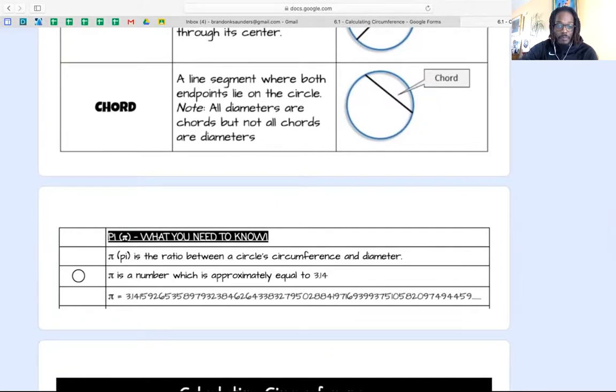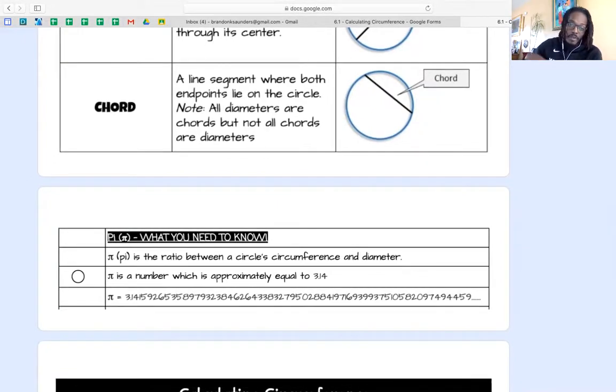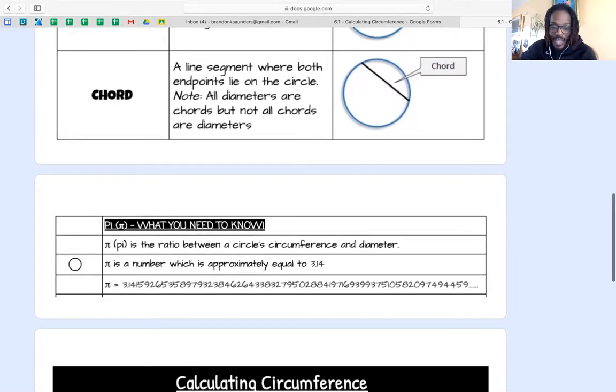The things that you need to know is that pi is the ratio between a circle's circumference and its diameter. Pi is a number that we use for finding area and circumference. Usually it is approximated to 3.14. The actual value of pi is a lot longer.